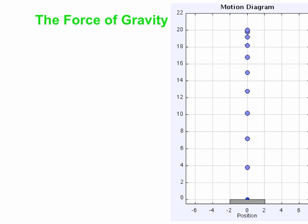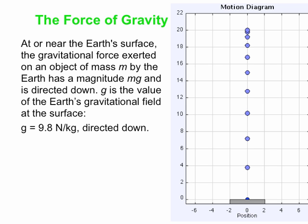Here we see a motion diagram for an object dropped from rest from a certain height above the ground. It starts at rest, but as it falls down, it gets faster and faster because the force of gravity is exerted on it. The successive images get further and further apart — those images are left behind at equal time intervals. At or near the Earth's surface, the force of gravity exerted on an object of mass m by the Earth has a magnitude of m times g, directed down toward the center of the Earth.